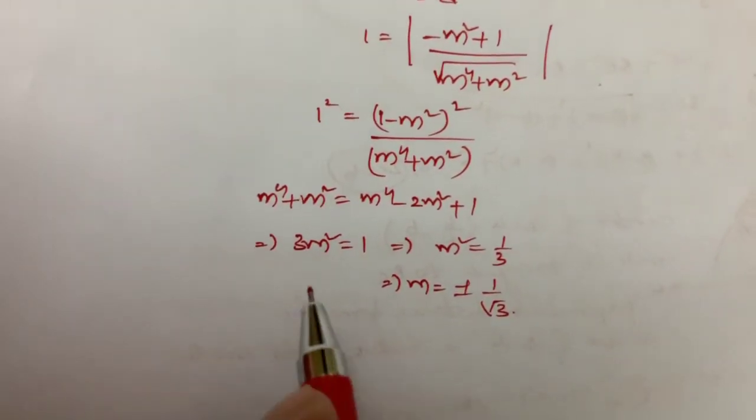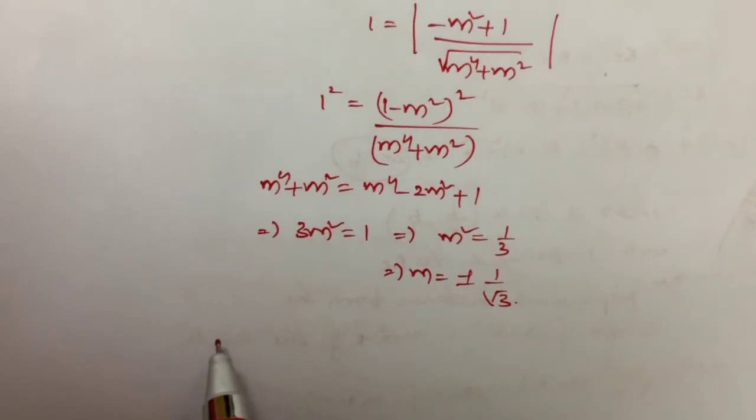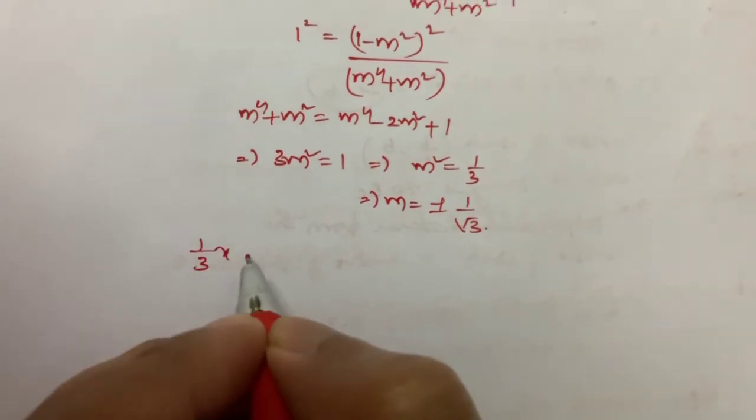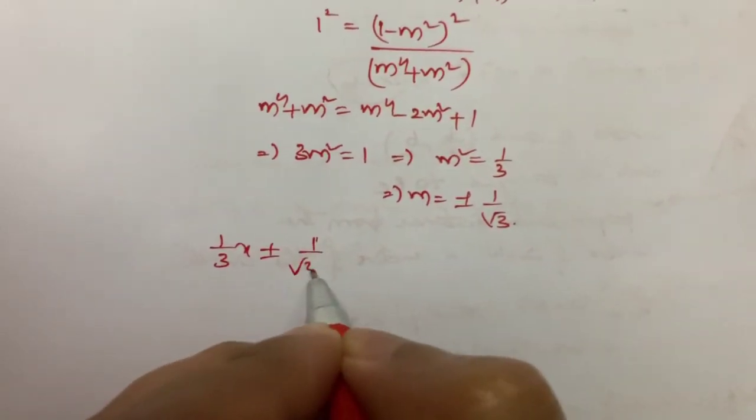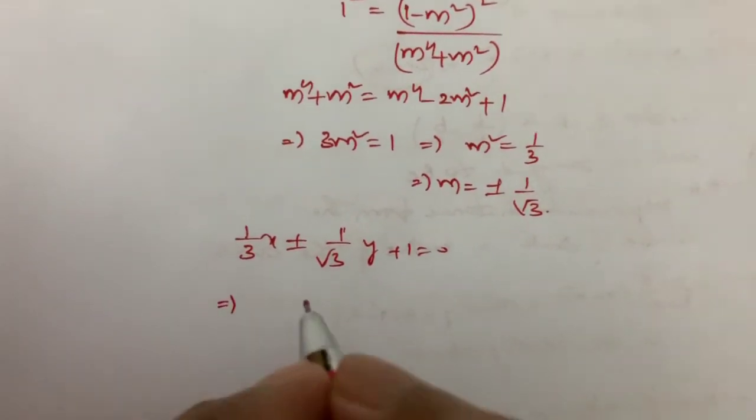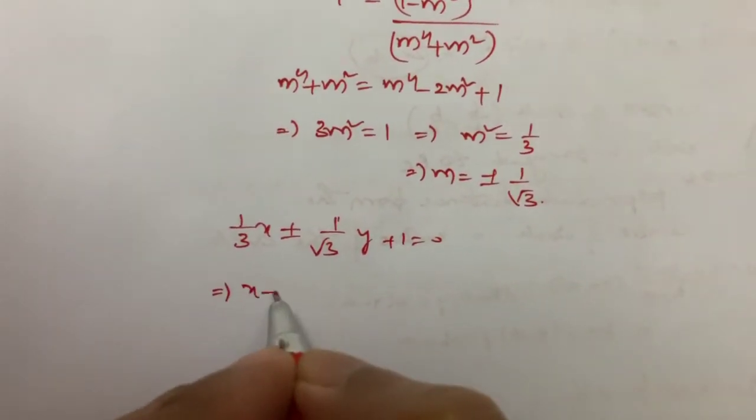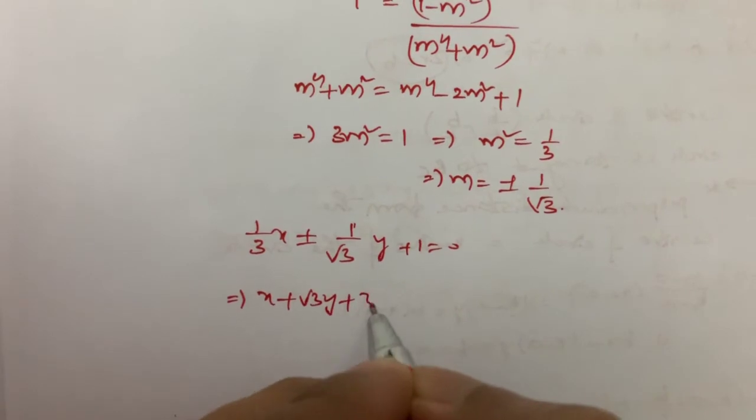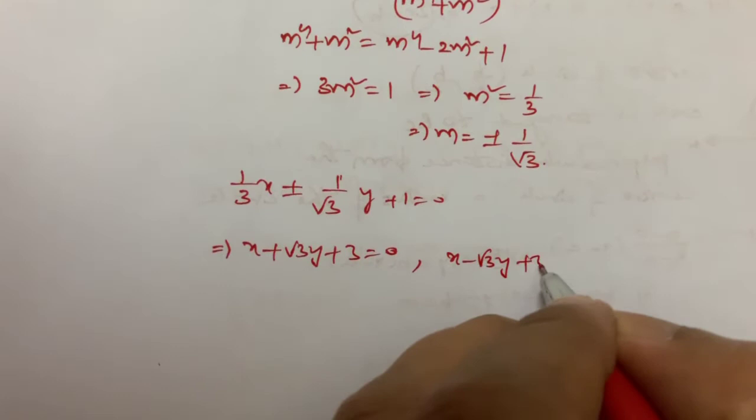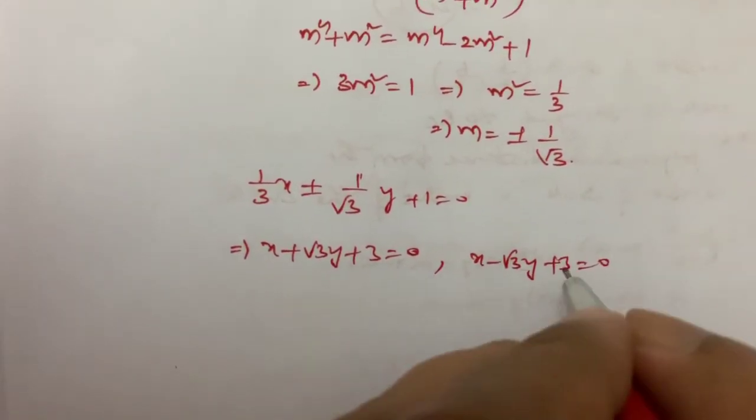So (1/√3)x ± (1/√3)y + 1 = 0. So this is x + √3y + 3 = 0. This is one tangent. x - √3y + 3 = 0 is the other tangent.